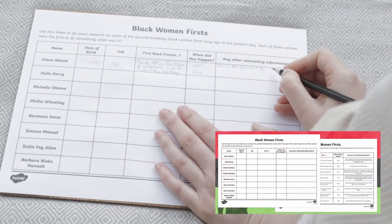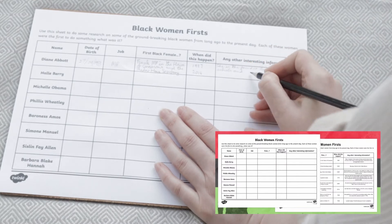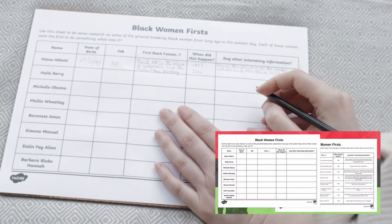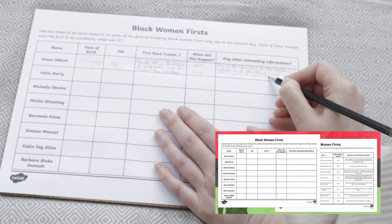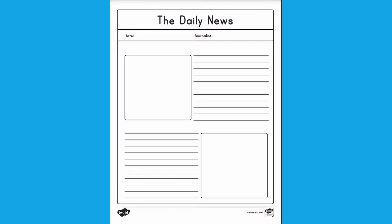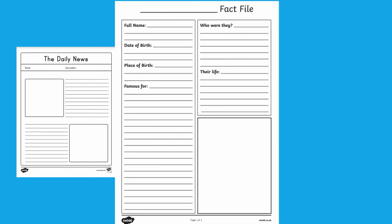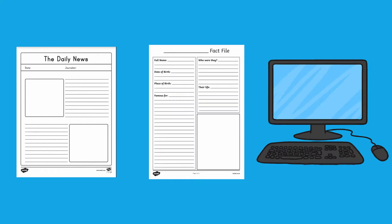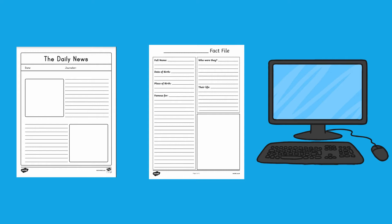Get children investigating with this Black History Month First Women Research Worksheet. Children can research the achievements of these influential black women in a computing lesson or through reading comprehensions. Pupils can then create a newspaper report, fact file, or PowerPoint presentation about one of these first women's achievements and life stories. Pupils will then share their research projects with the rest of the class.